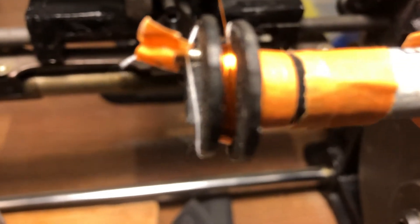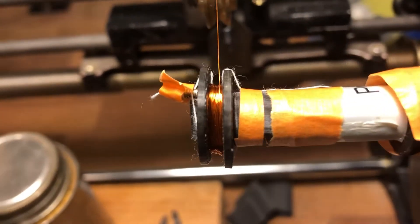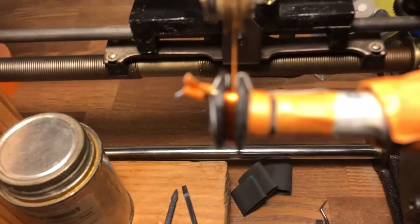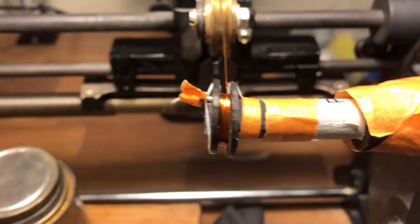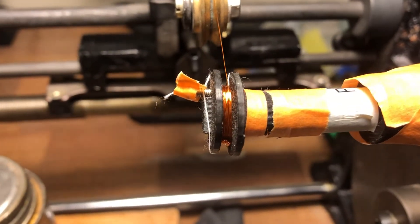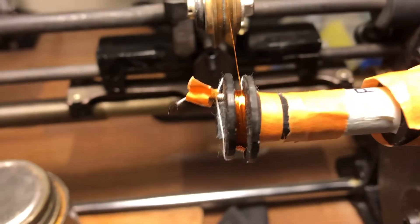Now the coil is wound to dimension and I can do the ties on it. Once I do the ties I can pull it off and show it to you guys, so let me do that.